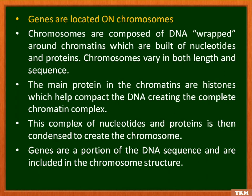Chromosomes are composed of DNA that is wrapped around chromatins, which are built of nucleotides and proteins. Chromosomes vary in both length and sequence. The main proteins in the chromatins are histones, which help compact the DNA creating the complete chromatin complex. This complex of nucleotides and proteins is then condensed to create the chromosome. So genes are basically a portion of the DNA sequence and are included in the chromosome structure.